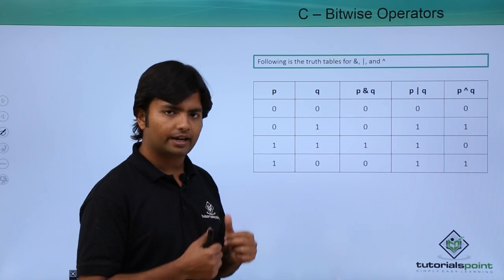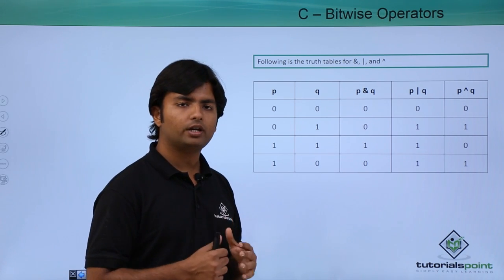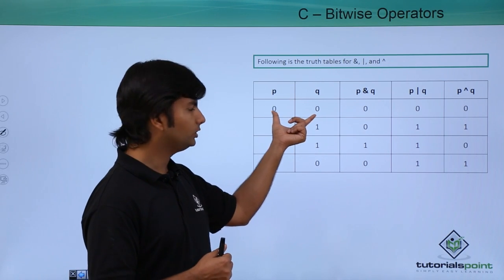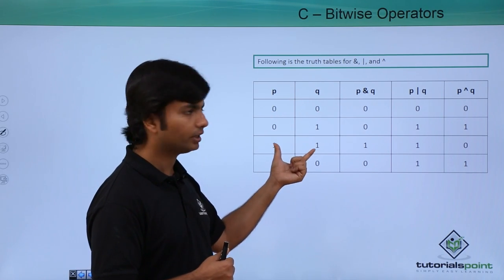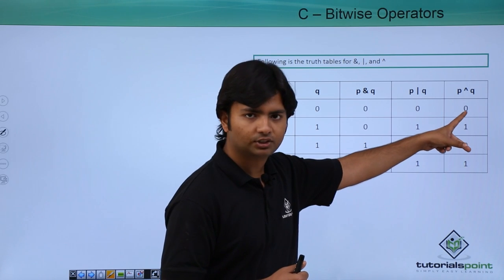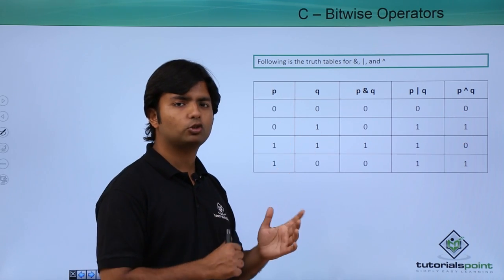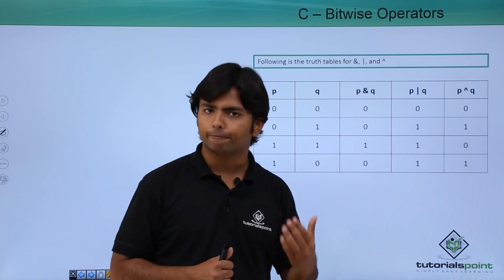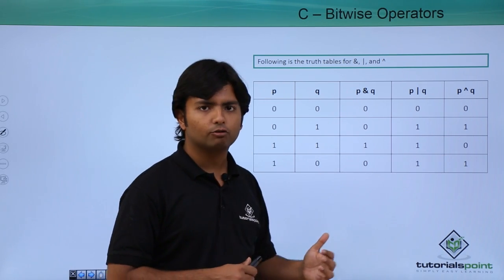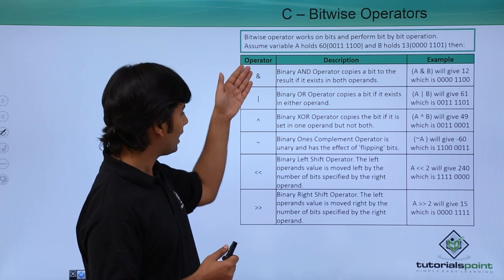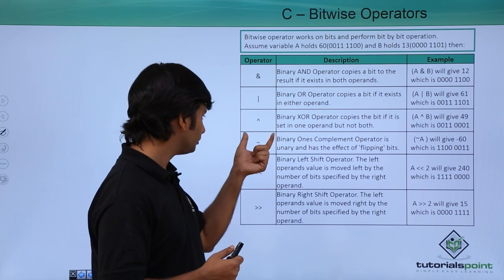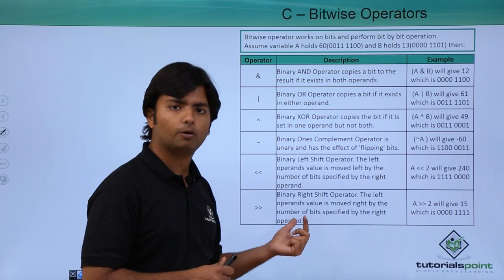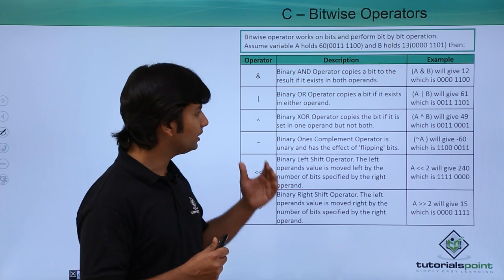The XOR operator returns true when any one of the bits is on. For example, when both bits are zero or both are one, it returns zero. But when it gets a combination like zero-one or one-zero, it returns one. Apart from these three, we also have the NOT complement operator, and the left shift and right shift operators.